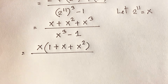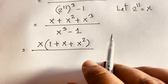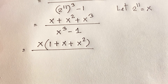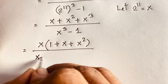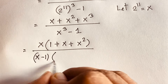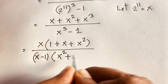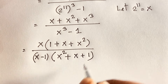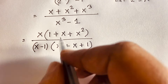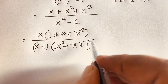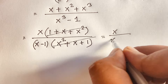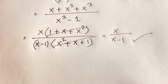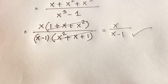Using the difference of cubes rule — a cubed minus b cubed equals (a minus b)(a squared plus ab plus b squared) — the denominator x cubed minus 1 becomes (x minus 1)(x squared plus x plus 1). The (x squared plus x plus 1) terms cancel, leaving x over (x minus 1).